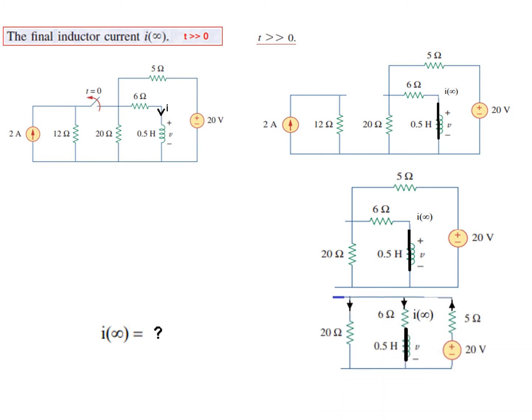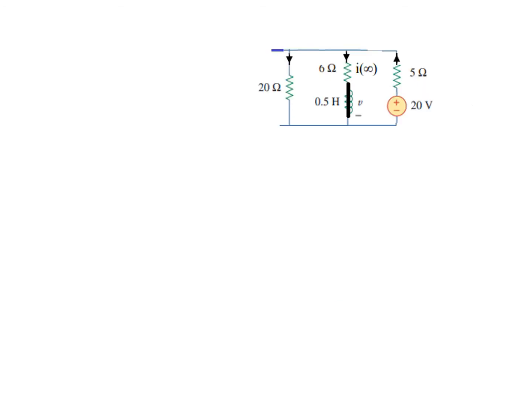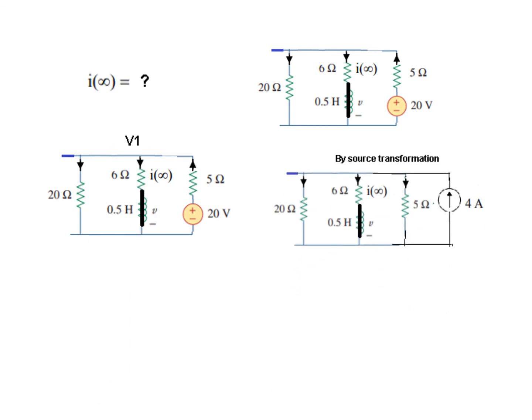So this is the circuit, and you can use any of the techniques that we have learned to find this current. Let's simplify the circuit as we did before. So this is the simplified circuit. From here, if you want to use nodal analysis, yes you can do that. We name the voltage here as V1 and find I infinity by nodal analysis.